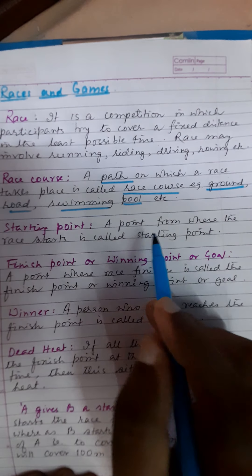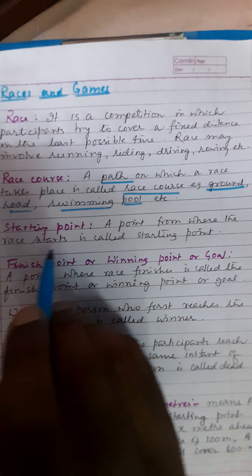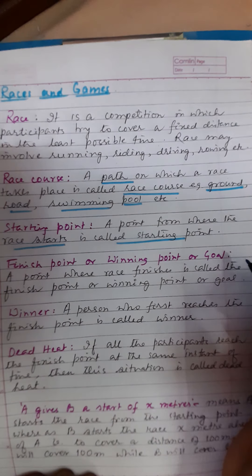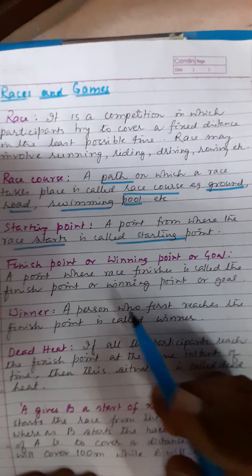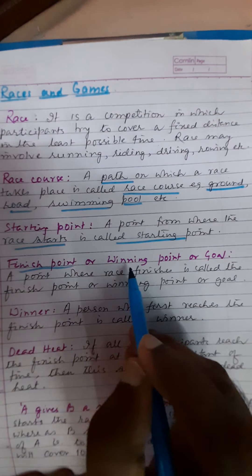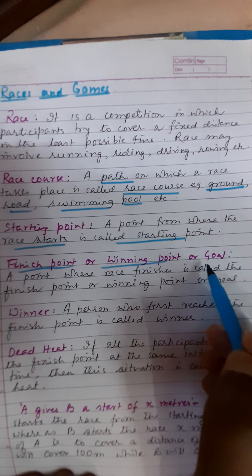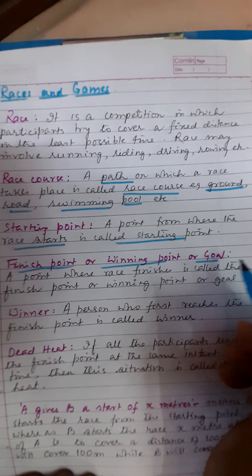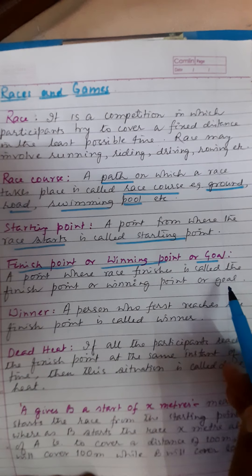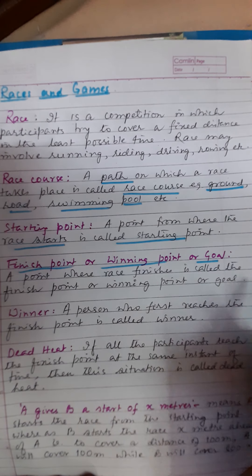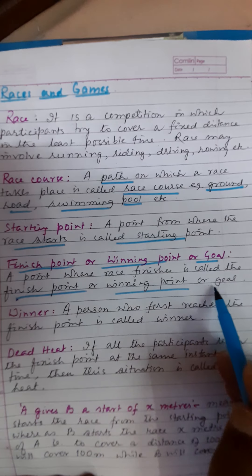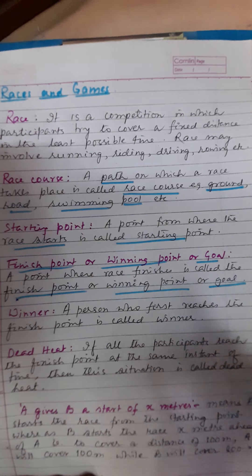Next is the starting point. A point from where the race starts is called a starting point. There are two points: one is the starting point and one is the finish point. The finish point is also called the winning point or goal. A point where the race finishes is called the finish point, winning point, goal, or achievement point.